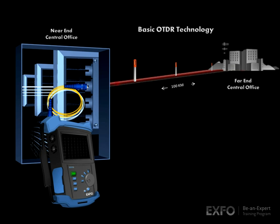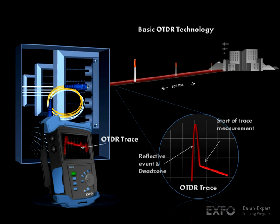Let's travel down a 100 kilometer fiber and see a sample of different optical events that the OTDR can detect. The first event is reflective and located right at the OTDR port. Because the OTDR is mechanically connected to the fiber under test, the connection creates an air gap, which causes a reflective dead zone where no measurement can take place.